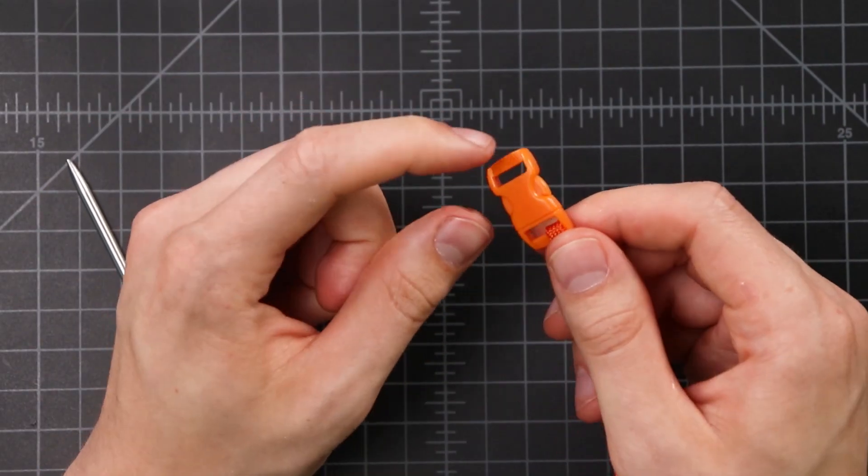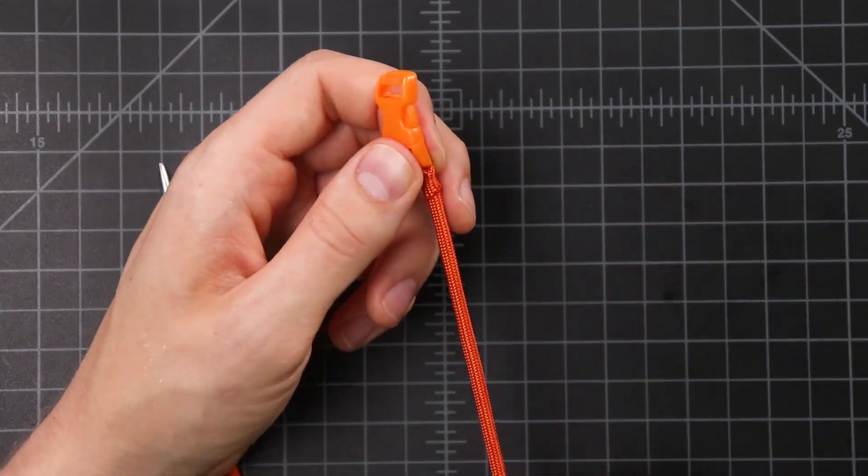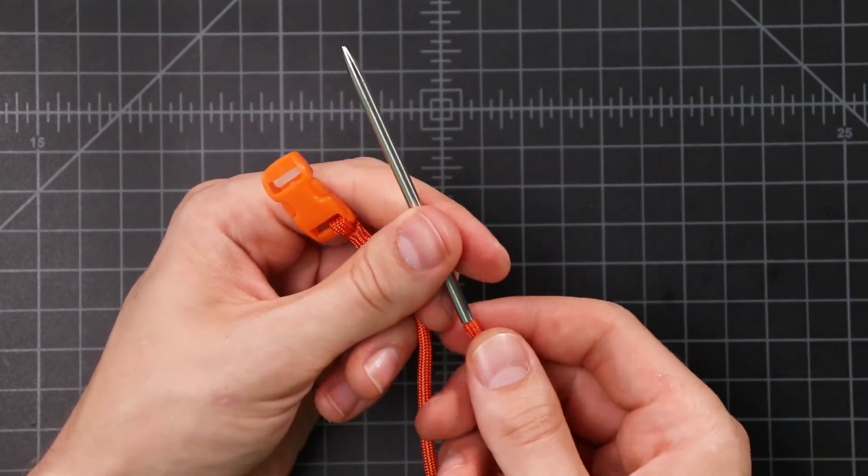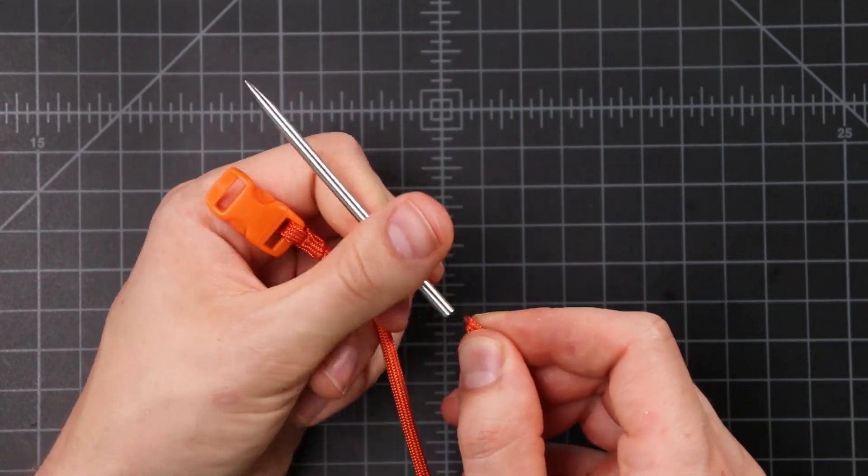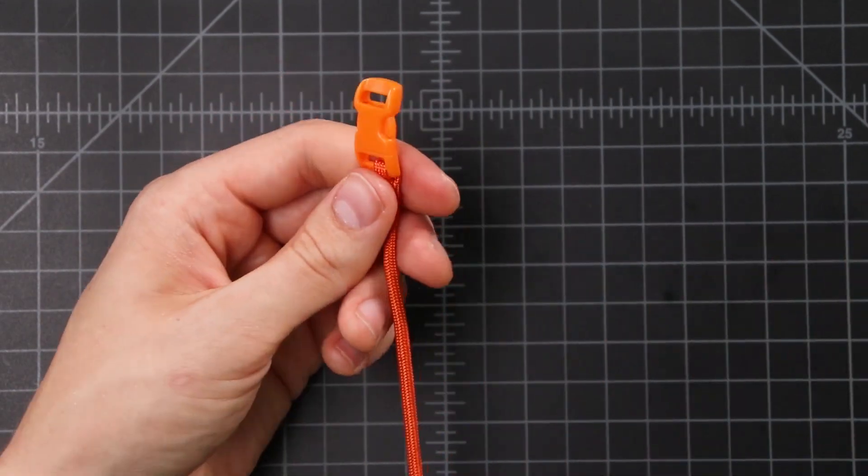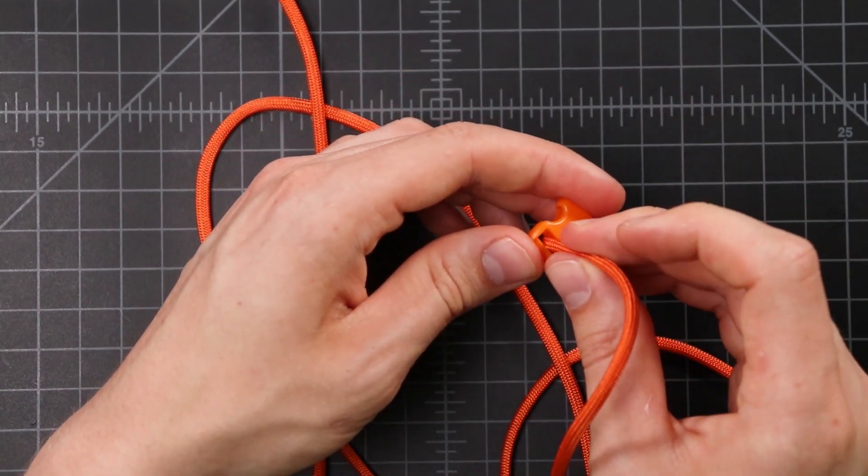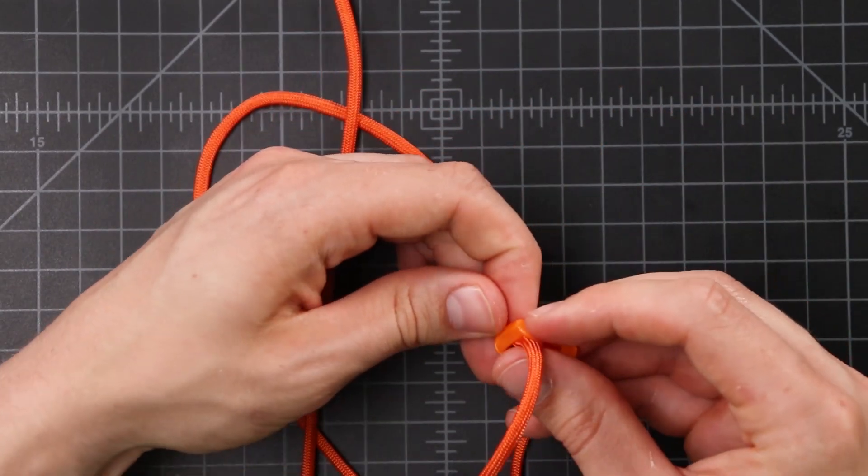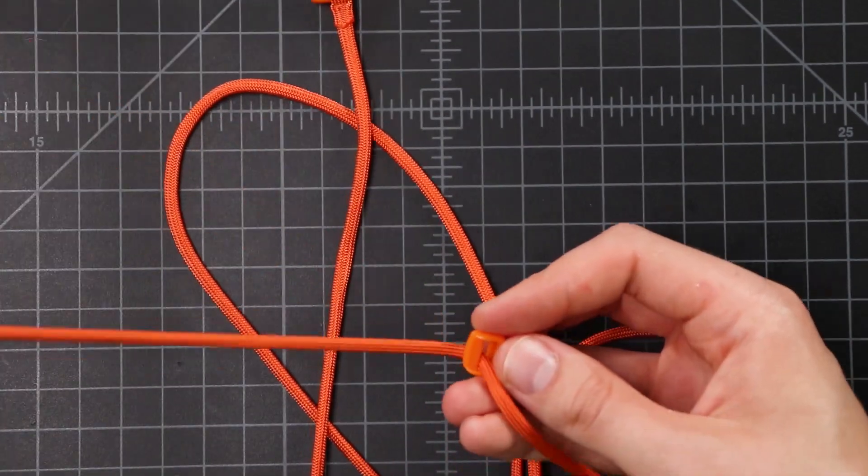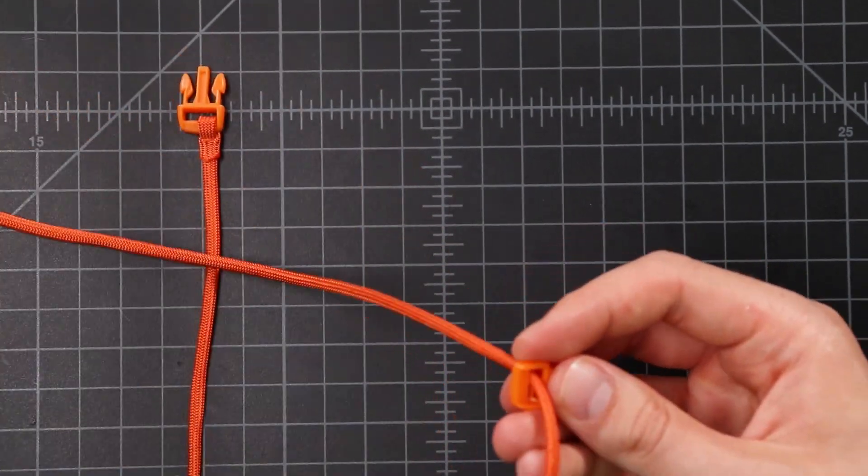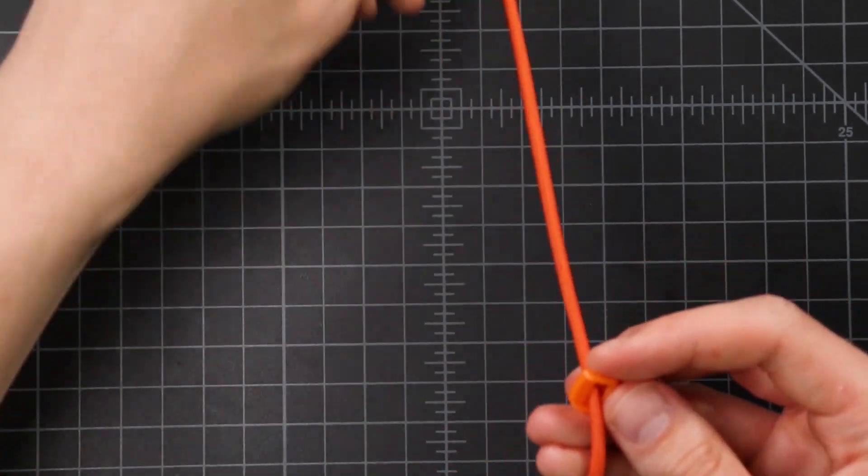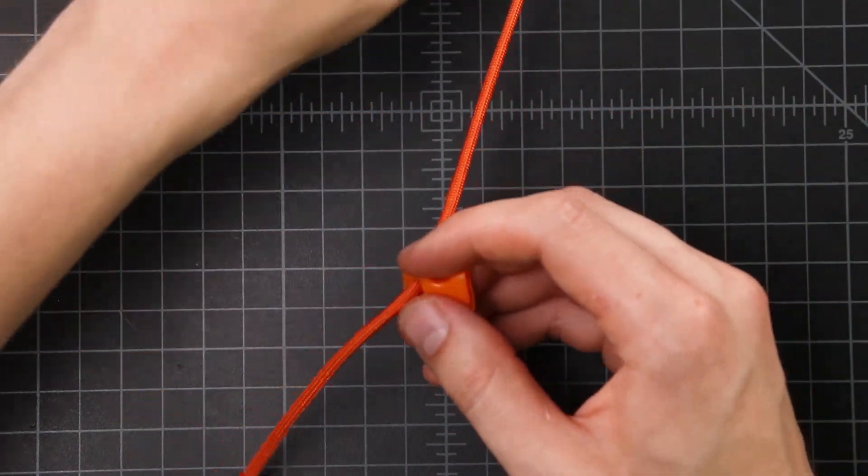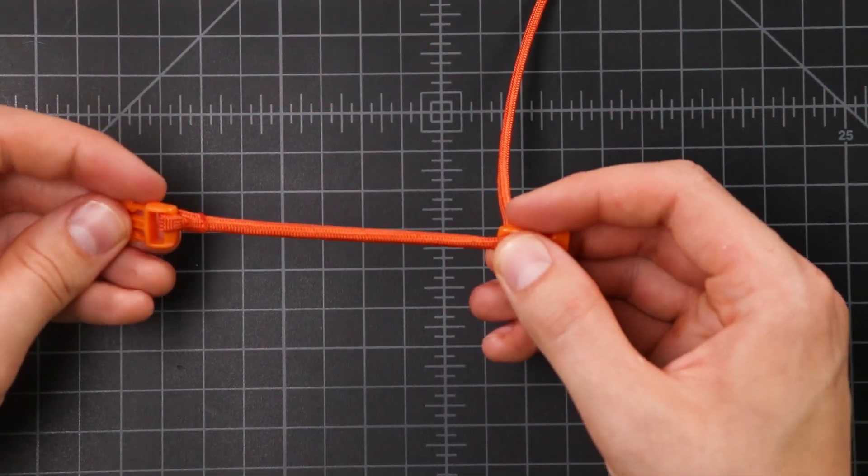So now we're going to go to the other end of the buckle. We'll have to take our FID off for this. If it helps you to visualize it, you can take your buckle apart. And we'll be going down through the top of the buckle. Then cinch it down until you have a bracelet length. We'll measure that in a little bit.